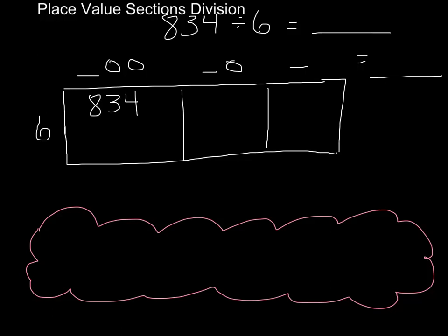The way we're going to go about that is place value by place value. So the first question we're going to ask ourselves is: how many hundreds of groups of six can we get out of 834? Well, immediately in my head I'm thinking, if I have 100 groups of six, that's 600.